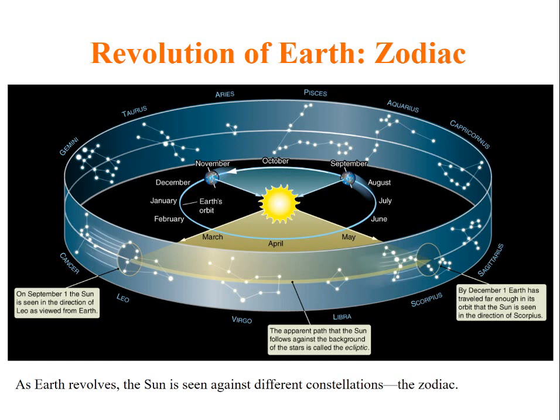On September 11, the sun is seen in the direction of Leo as viewed from Earth. The apparent path that the sun follows against the background of stars is called ecliptic. By December 1, Earth has traveled far enough in orbit and the sun is seen in the direction of Scorpius. That is why we have these Zodiacs.